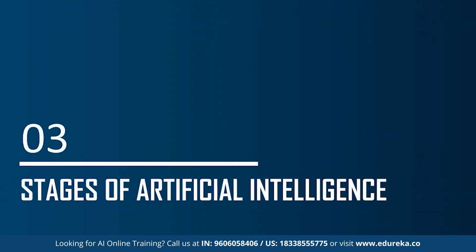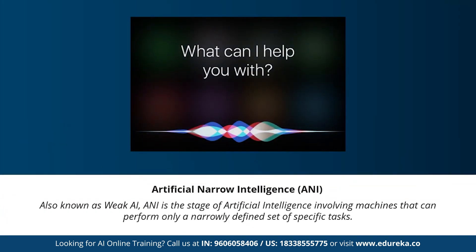Now let's understand the different stages of artificial intelligence. A lot of videos and articles state that artificial general intelligence, artificial narrow intelligence, and artificial super intelligence are the different types of AI. To be more precise, these are actually the three different stages of AI — the types of AI are completely different from the stages. Under the stages of AI we have artificial narrow intelligence, artificial general intelligence, and artificial super intelligence.